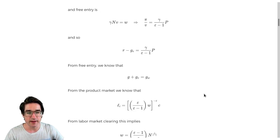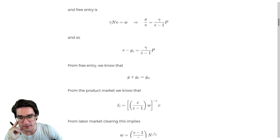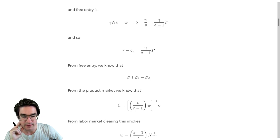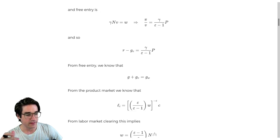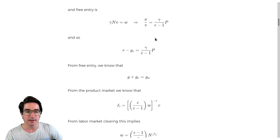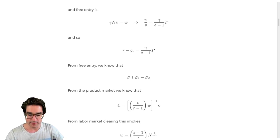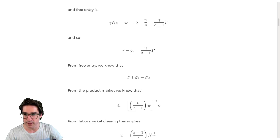When solving this model, the light at the end of the tunnel is the free entry condition — once you have it, it's just a matter of substituting in things you know about the value and everything else. I have three modes here: lecturing mode, looking-at-notes mode, and whiteboard mode where I can draw things.